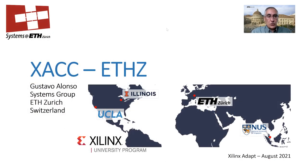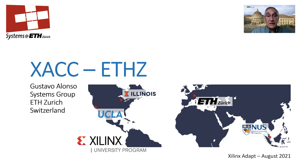Hi, my name is Gustavo Alonso. I am a professor at ETH Zurich in Switzerland, and I'm going to briefly present the activities around the Xilinx Adaptive Compute Cluster that we have been running here at ETH for about a year and a half. There are four clusters at the moment — two in the United States, one in Singapore, and one in Switzerland, as shown on the map on the slide.